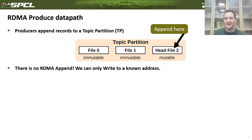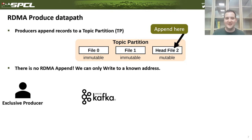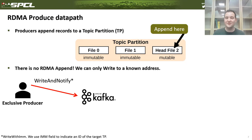The problem is that RDMA doesn't offer append capability — you can only write to a known address. So the producer must know where it should write. In the case of an exclusive producer, this is not a problem. The producer can have full control over records in the file and incrementally write new records. For that, it would use write-with-immediate to write the record and notify Kafka that a new record was appended.